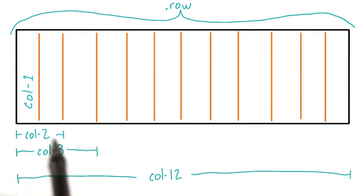Same thing for column three, that is three columns wide. And so on until we get to column 12, which is the full width of the row.